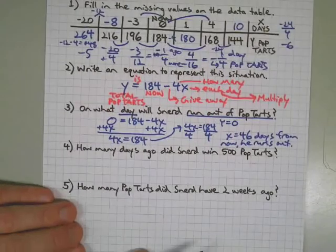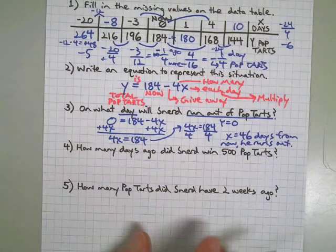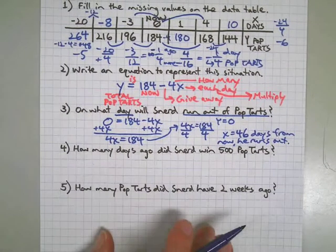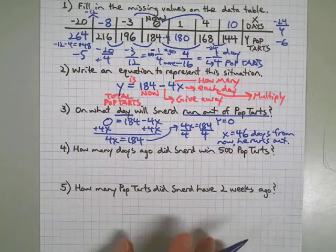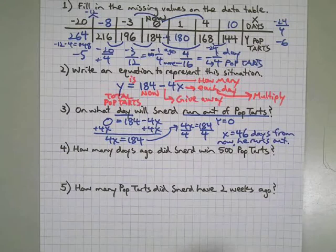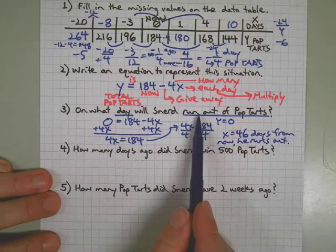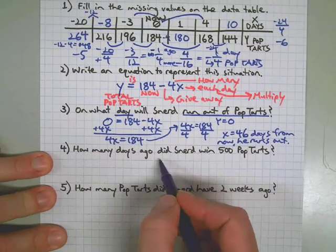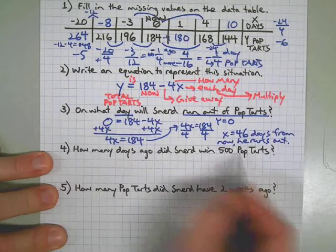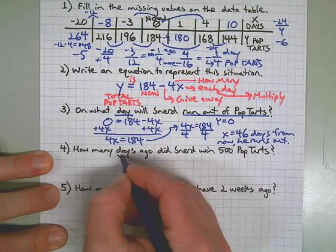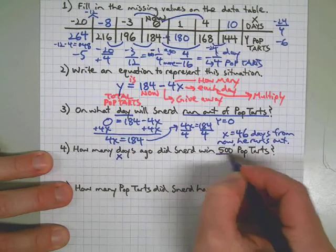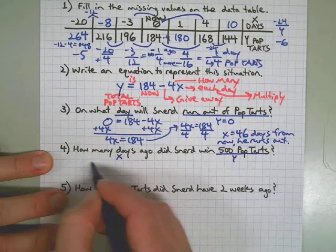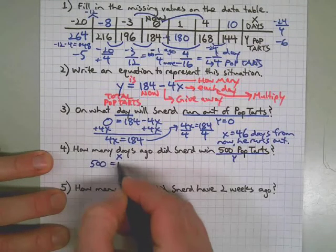Always remember to make your answers and your equations mean something, not because I'm the mean teacher that makes you do extra work, but it helps you get answers that make sense and it's a way for you to check your work. Does this answer make sense? Does it answer the question? And in this case of course it does. How many days ago did he win 500 pop-tarts? So our answer is going to be in terms of x and this is our y value.